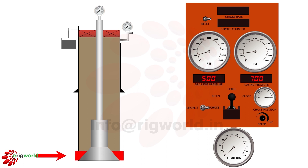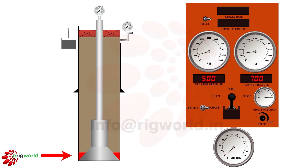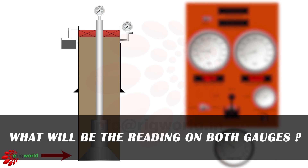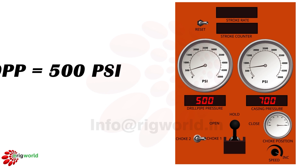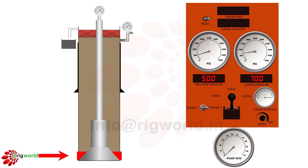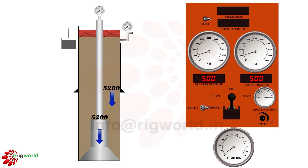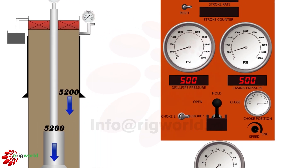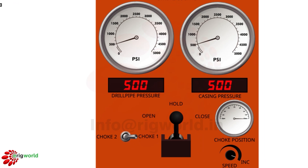Why is SICP more than SIDPP? Because of lighter influx present in the annulus, which creates less hydrostatic pressure than drilling mud. In the first cycle, we will circulate out the influx. Once the influx gas is circulated out, both gauges will read the same pressure. In the first cycle, the influx is circulated out and the hydrostatic pressure on both sides becomes equal — drill string and casing gauge will both read 500 psi.